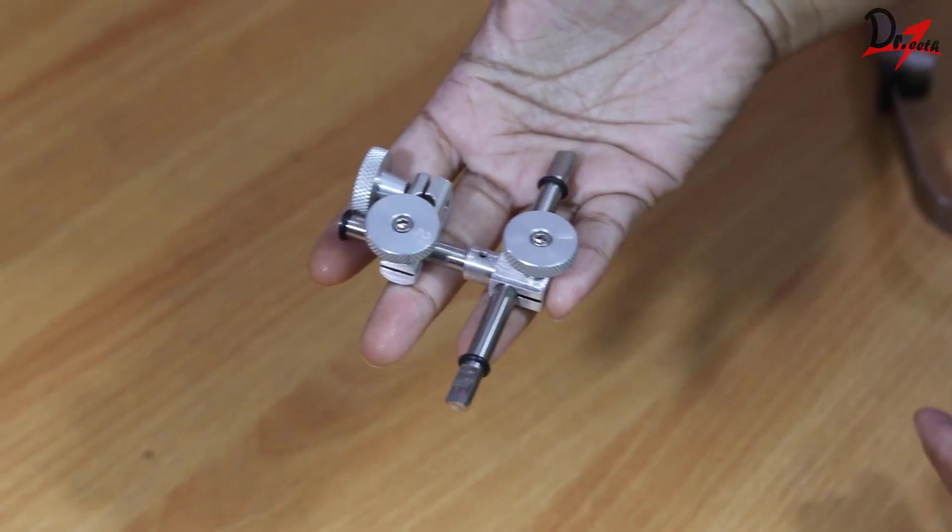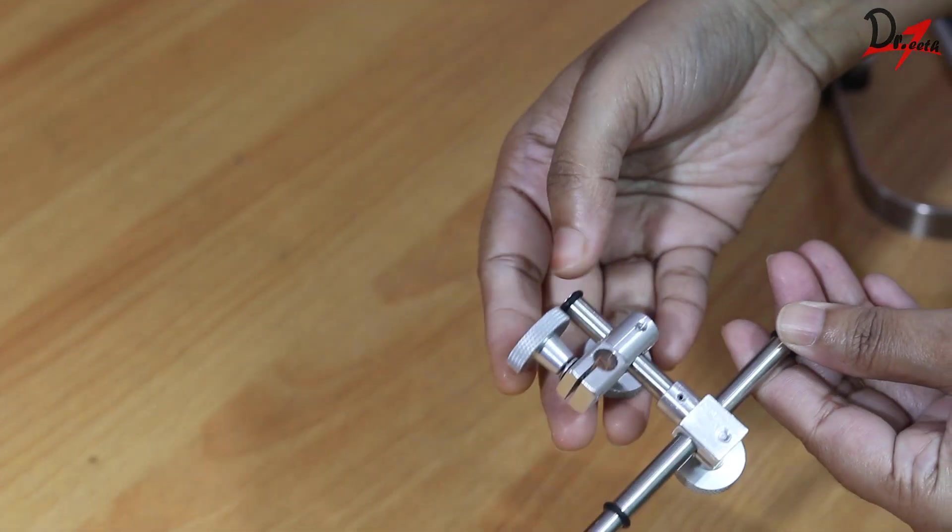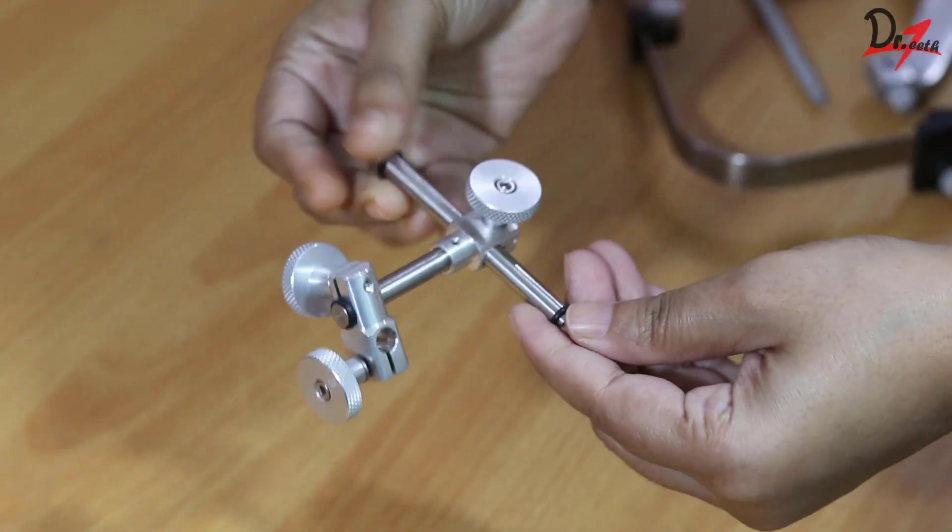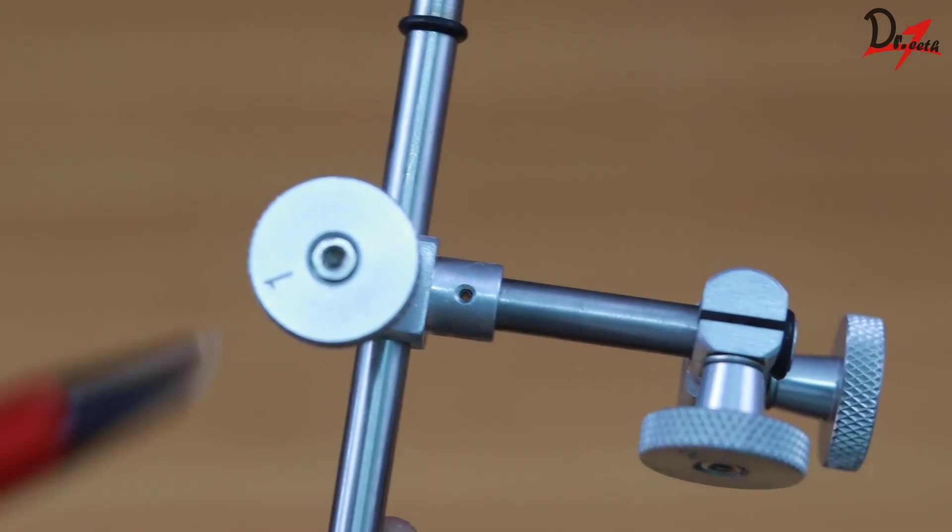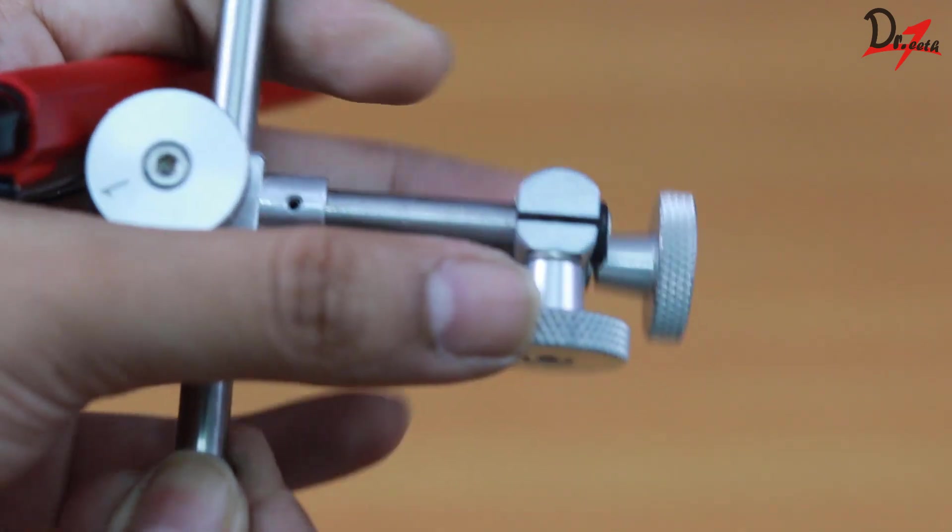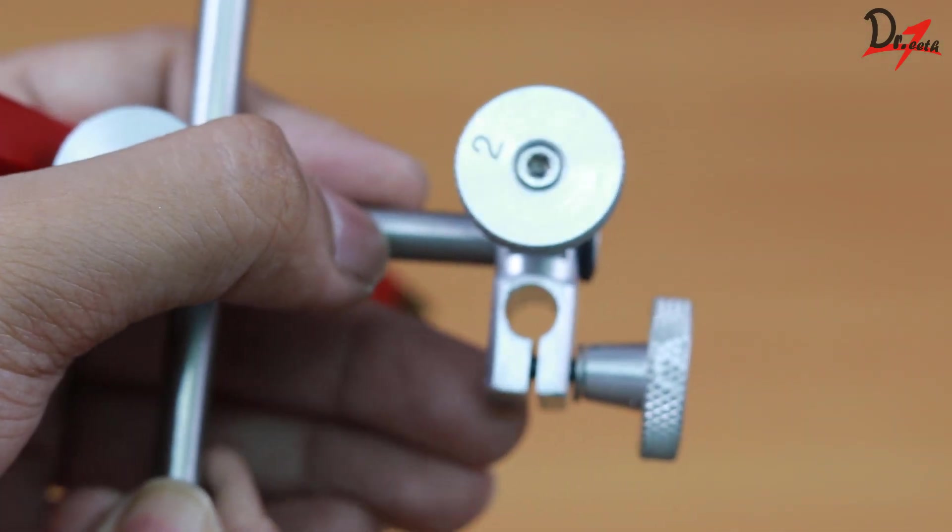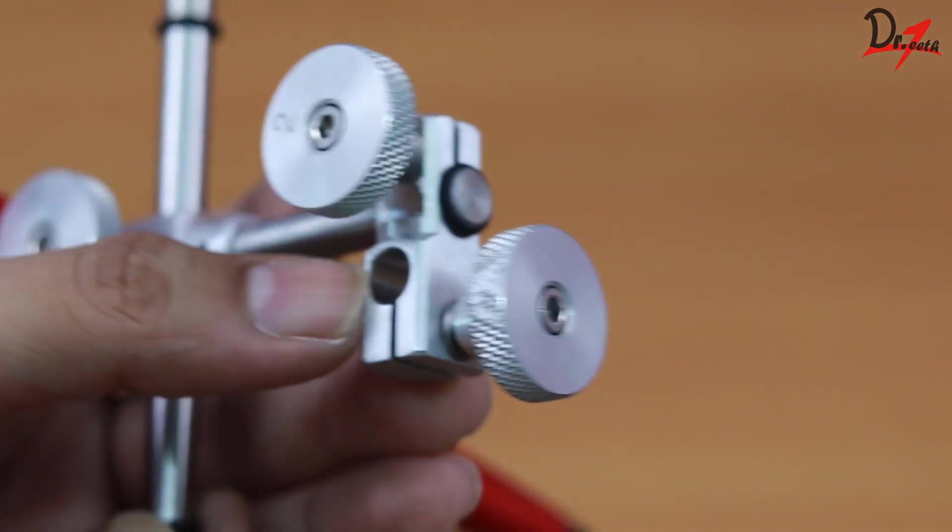Then we have this locking device. Basically it will attach the U-shaped frame with the bite fork. And here we can see we have three screws here, so we can adjust the plane and lock it in place using these three thumb screws.